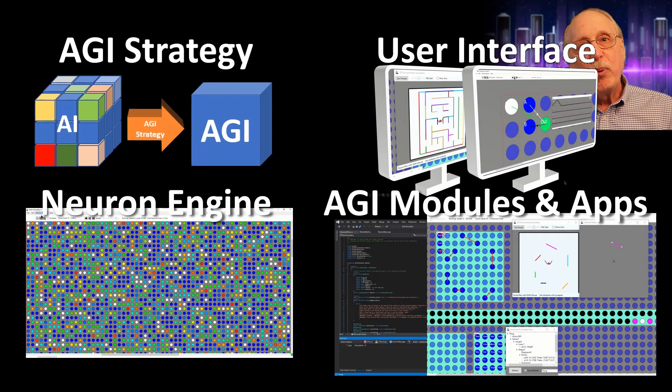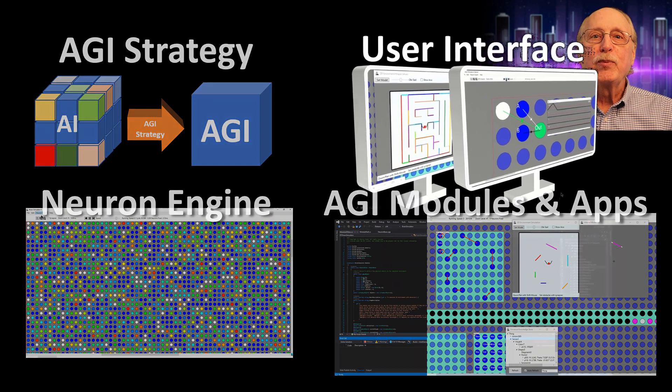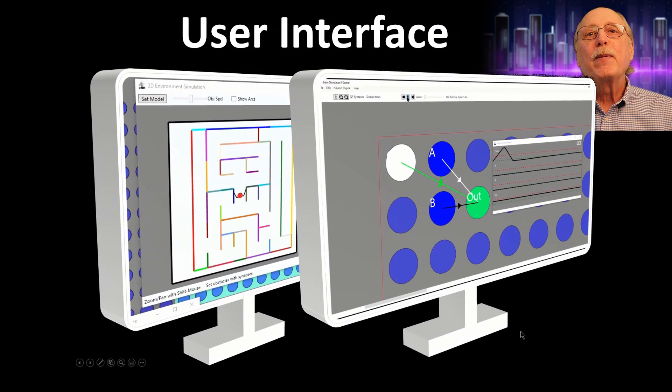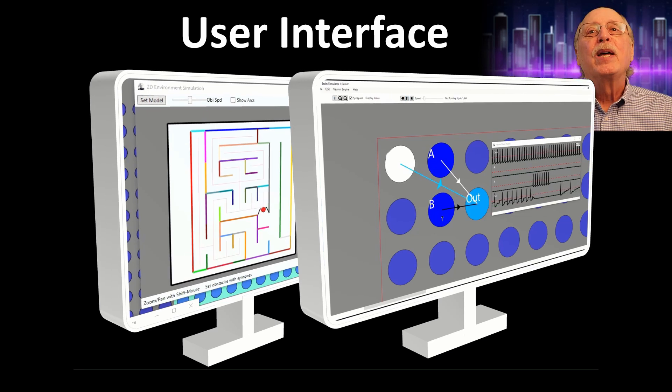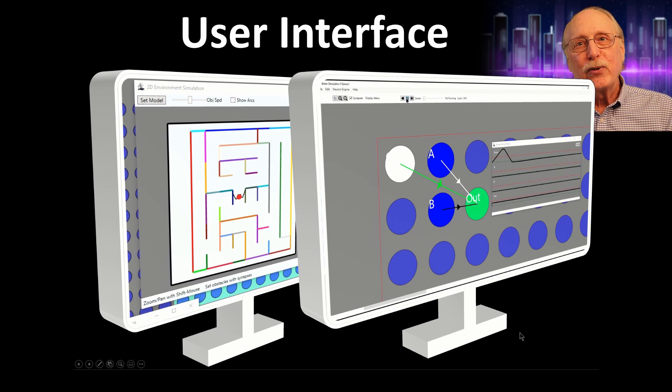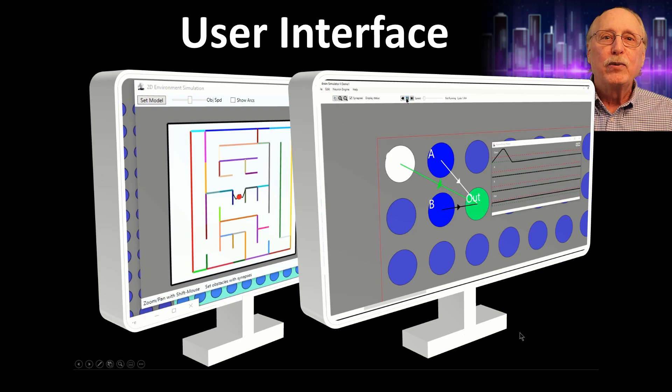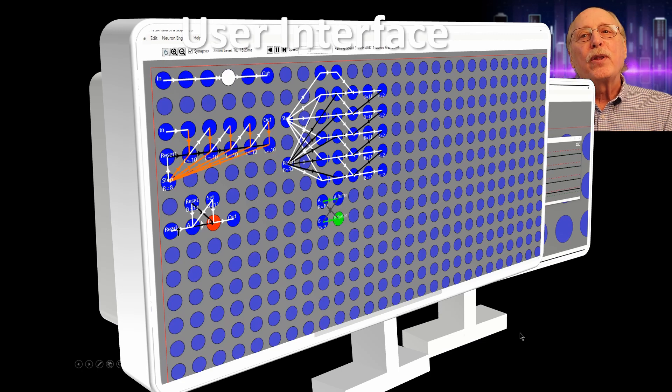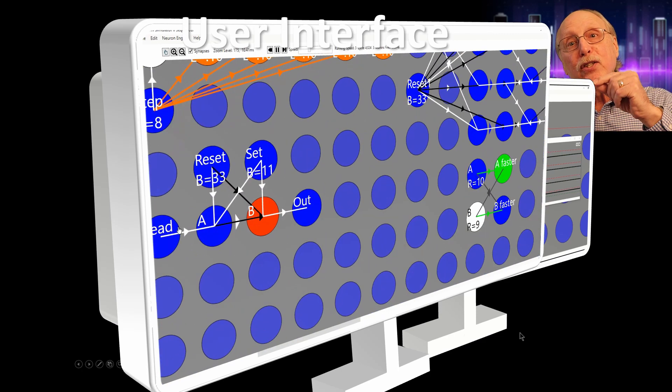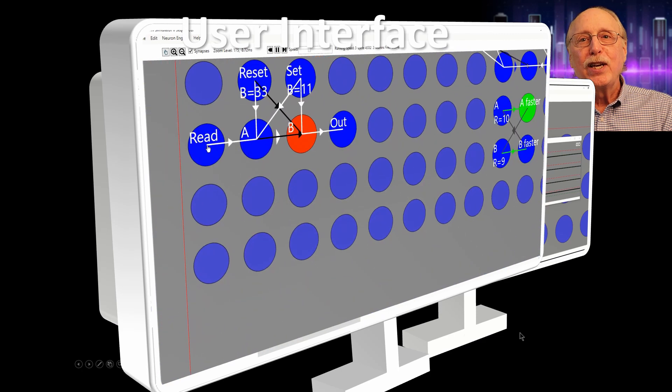One important facet of software experimentation is the ability to control and modify your experiments and see the results easily. The Brain Simulator user interface has been tested with a billion neurons, but lets you drill down to examine the state and timing of individual neurons and synapses. You can think of a neuron network as a document which you can edit, save and restore.